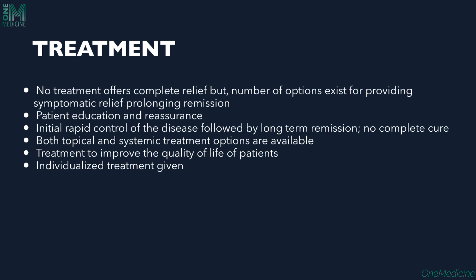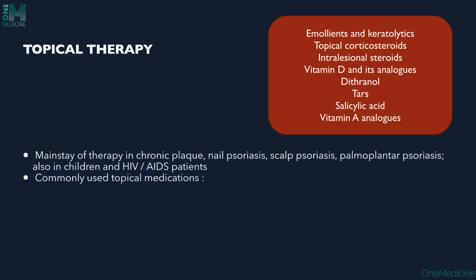Regarding treatment, there is no treatment which offers complete relief - you can achieve remission but not complete cure. Patient education and reassurance are important. The aim is initial rapid control followed by long-term remission treatment. Both topical and systemic therapies are available. Treatment is done to improve the quality of life of the patient. Topical therapy is the mainstay for chronic plaque psoriasis, nail psoriasis, scalp psoriasis, and palmoplantar psoriasis.